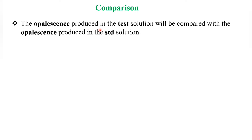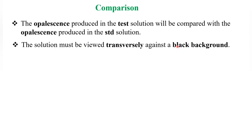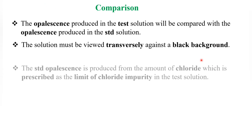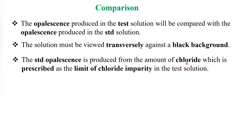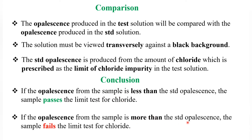Now we go for comparison. The opalescence produced in the test solution is compared with the opalescence produced in the standard solution, viewed transversely against a black background. The standard opalescence is produced from the amount of chloride prescribed as the limit of chloride impurity. Conclusion: if the opalescence from the sample is less than the standard opalescence, the sample passes the limit test for chloride. If the opalescence from the sample is more than the standard opalescence, the sample fails the limit test for chloride.